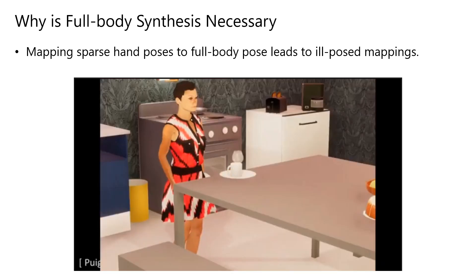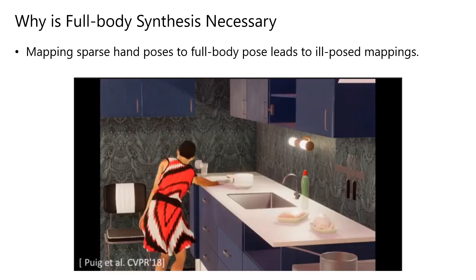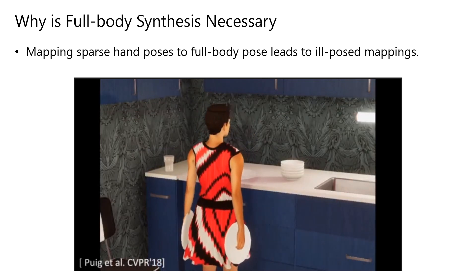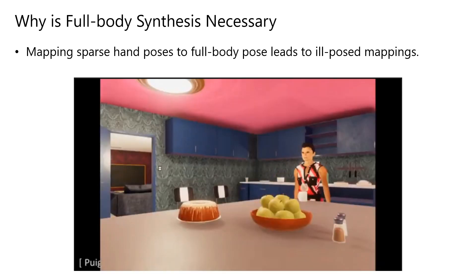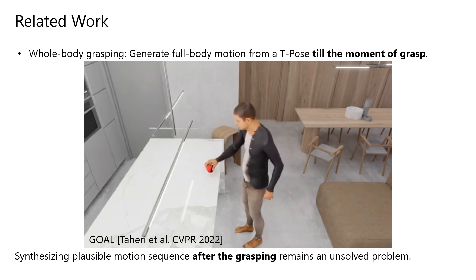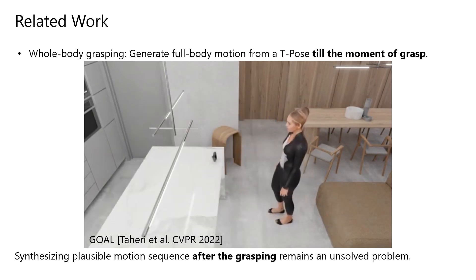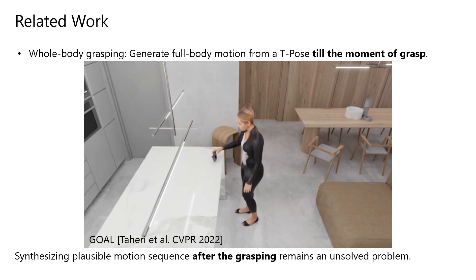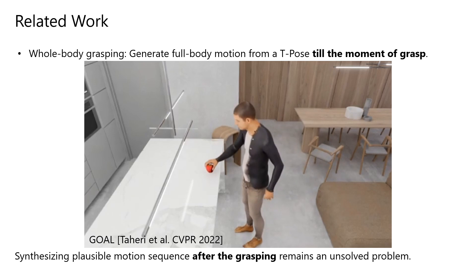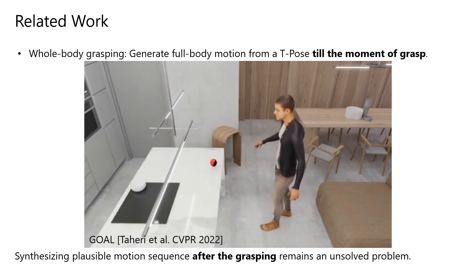While it's possible to map the sparse inputs of hand poses to a full-body pose, it leads to a heavy pipeline in addition to introducing an ill-posed mapping function. Recent works on whole-body grasping like GOAL estimate full-body motions from a starting t-pose to the moment of grasp using motion infilling, but none of the existing methods addresses how different actions are affected when objects also come into the scene.